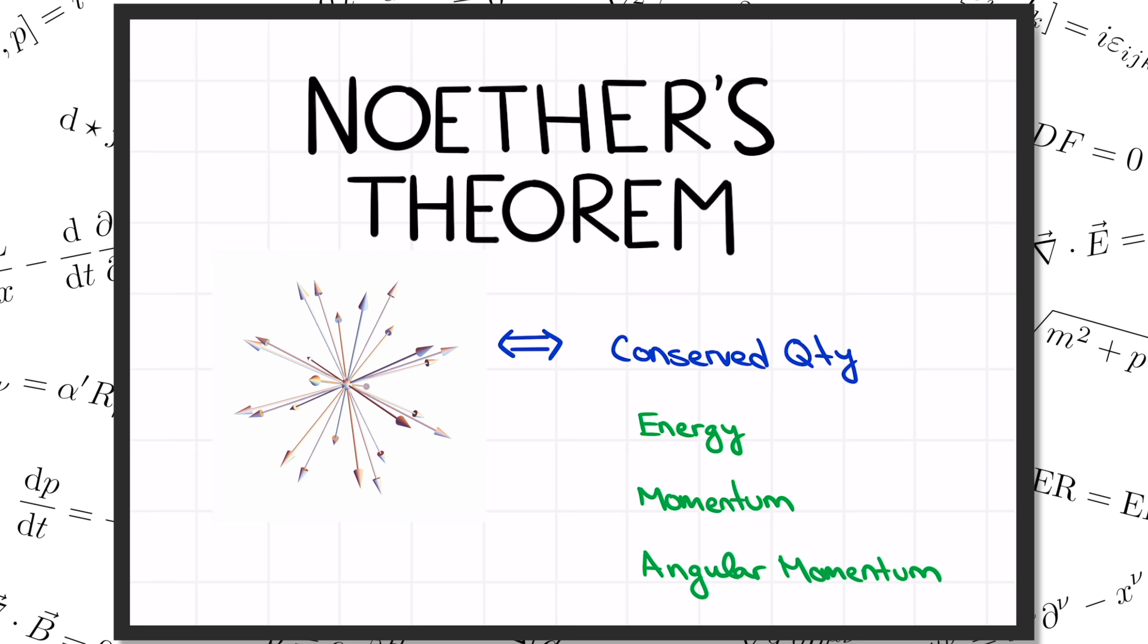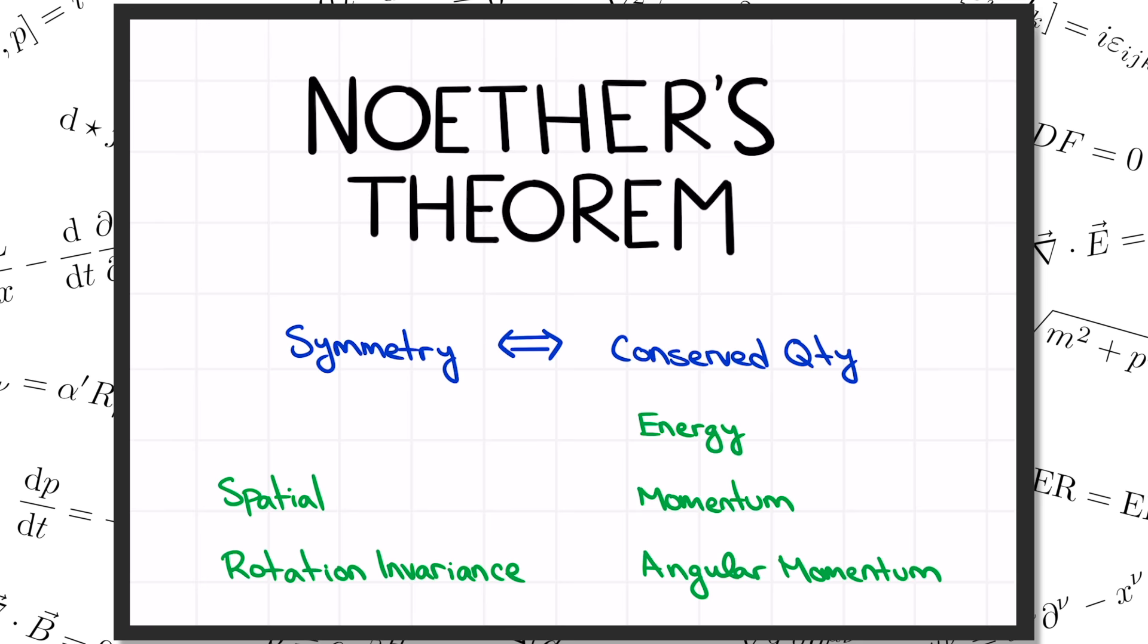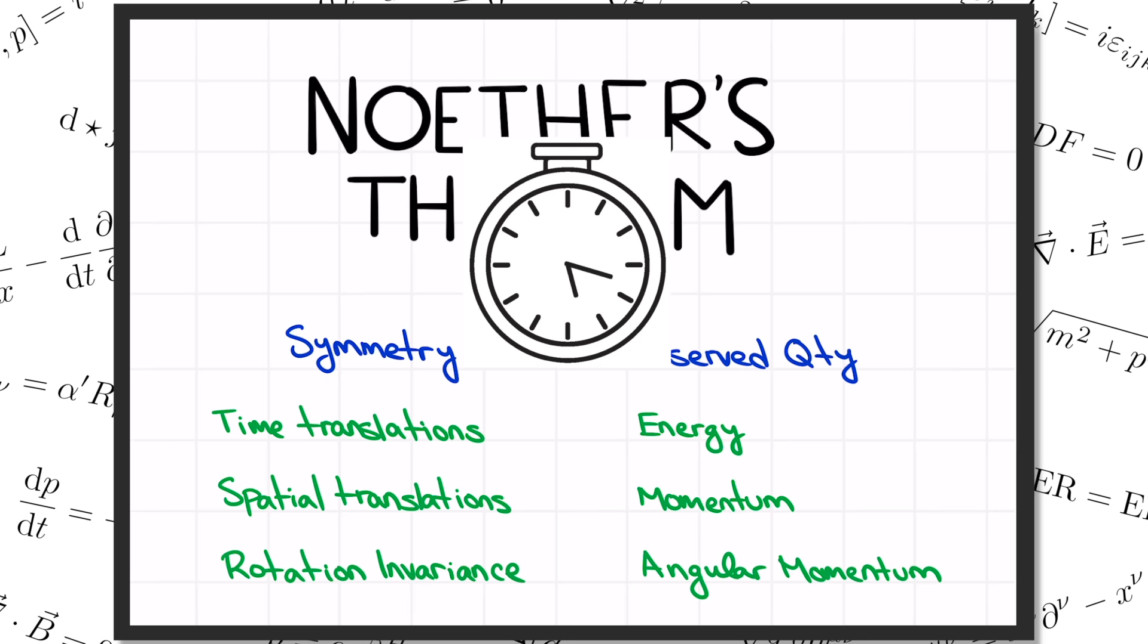Other examples of symmetries are spatial translation invariance, meaning if you can pick up your experiment and move it over to another lab, or another corner of the universe if you like, without any consequences. And time translation invariance, meaning that the laws of physics look the same yesterday as they do today, and as they will tomorrow.